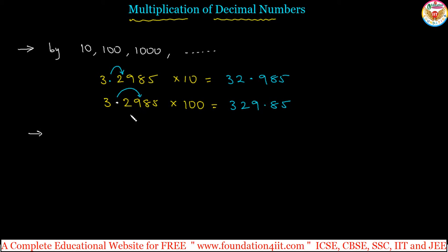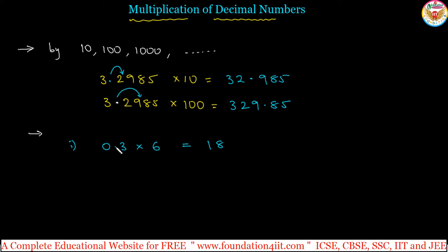Next is multiplication by a whole number — any decimal number multiplied by a whole number. For example, 0.3 multiplied by 6, where 6 is the whole number. Multiply in the ordinary way without considering the decimal point: 3 times 6 is 18. Now check how many decimal places are after the point — only one. So from the right side, leave one digit and put the point: 0.3 into 6 is 1.8.